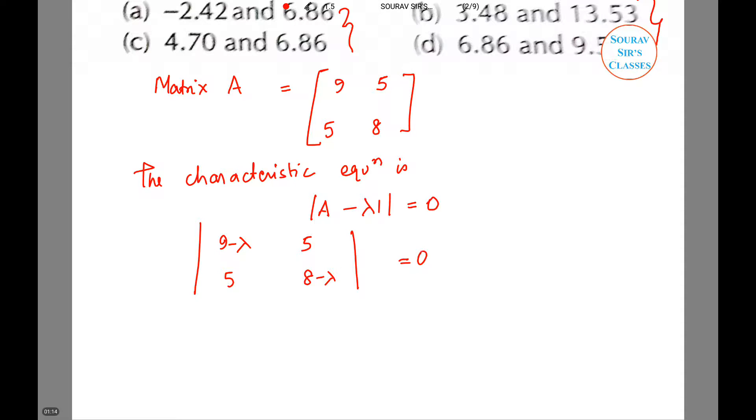This implies that (9-λ)(8-λ) - 25 = 0, or 72 - 8λ - 9λ + λ² - 25 = 0, or this can be written as λ² - 17λ + 47 = 0.